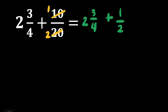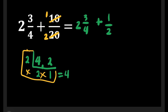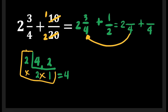Let's get the LCD of 4 and 2. What number can we divide 4 and 2? That's 2. 4 divided by 2 is equal to 2, and 2 divided by 2 is equal to 1. There's no number that can divide 2 and 1, so that is already our LCD. We'll multiply the numbers inside the box: 2 times 2 is equal to 4, times 1 is 4. So our LCD is 4. Now, 4 divided by 4 is equal to 1, times 3 is equal to 3. Next, 4 divided by 2 is equal to 2, times 1 is equal to 2.